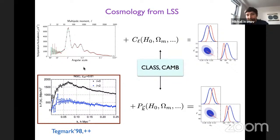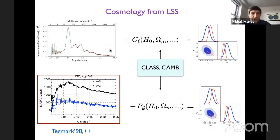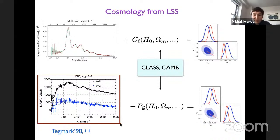We use Boltzmann codes like CLASS or CAMB to compute the theoretical prediction for the power spectrum as a function of cosmological parameters, then compare the two to define regions of parameter space most likely to produce the observed spectrum. With galaxies we want to do pretty much the same: we have measurements of the galaxy power spectrum from large spectroscopic surveys like BOSS or SDSS, and in principle we want to compute a theoretical curve as a function of cosmological parameters.